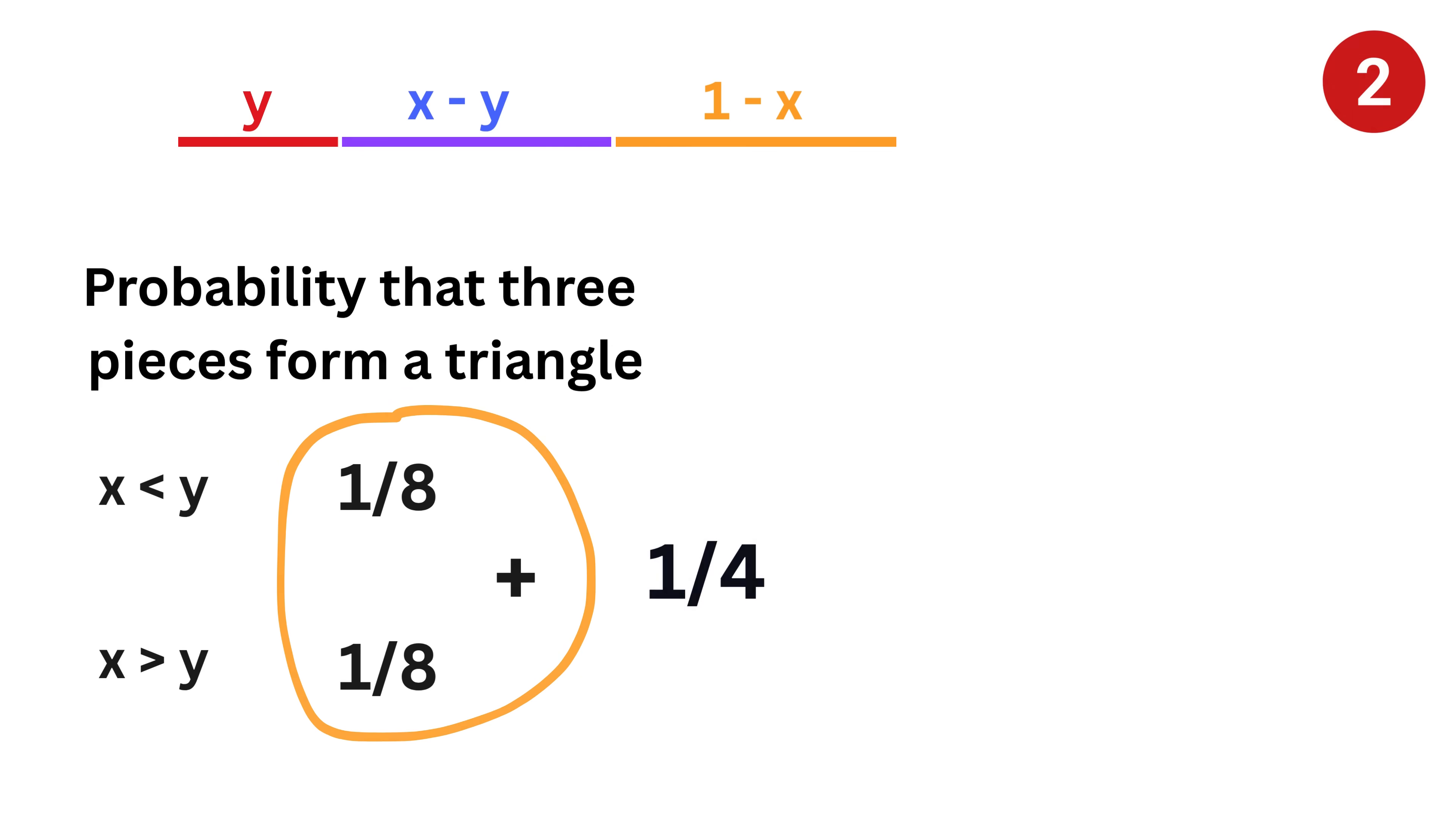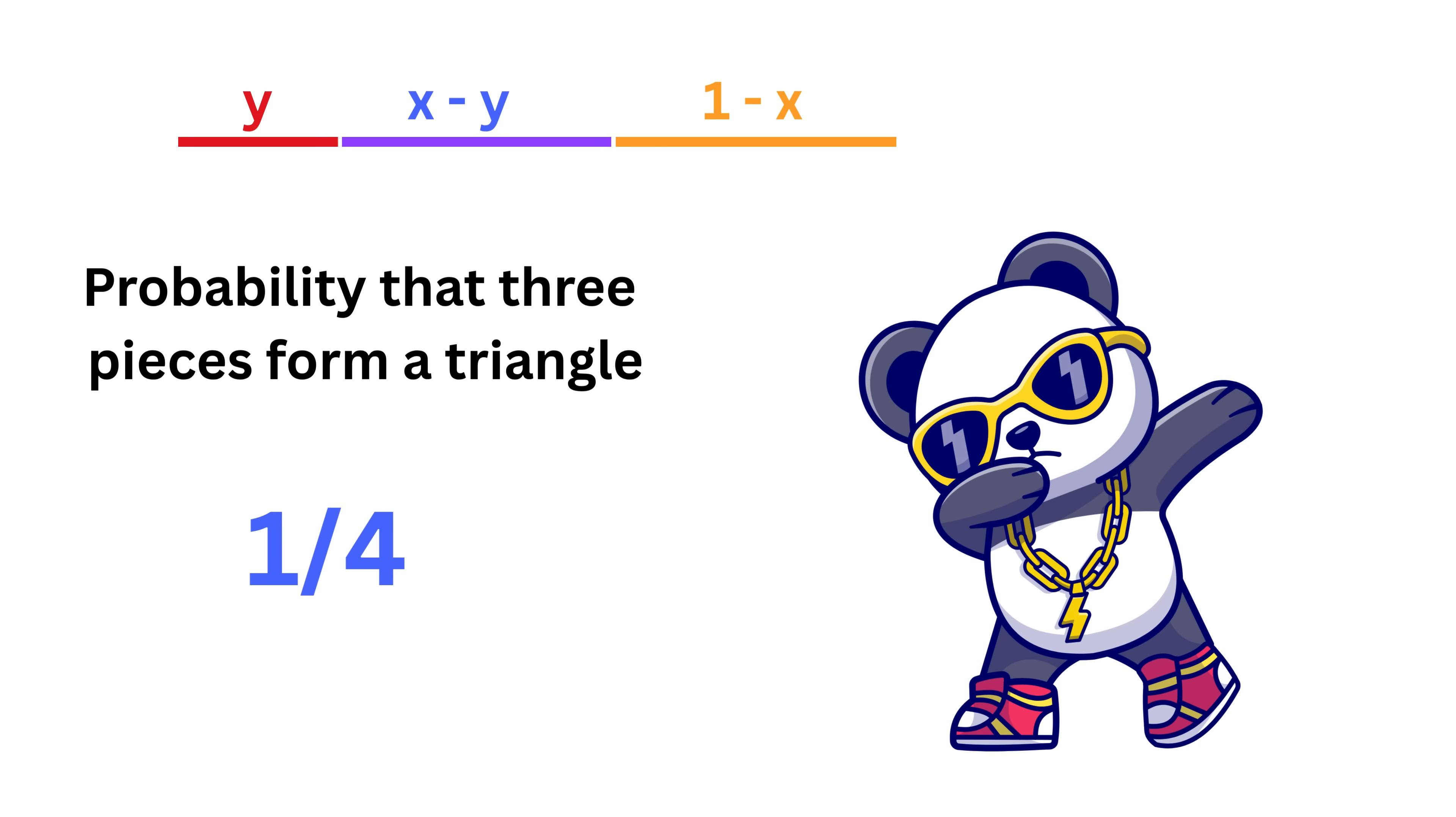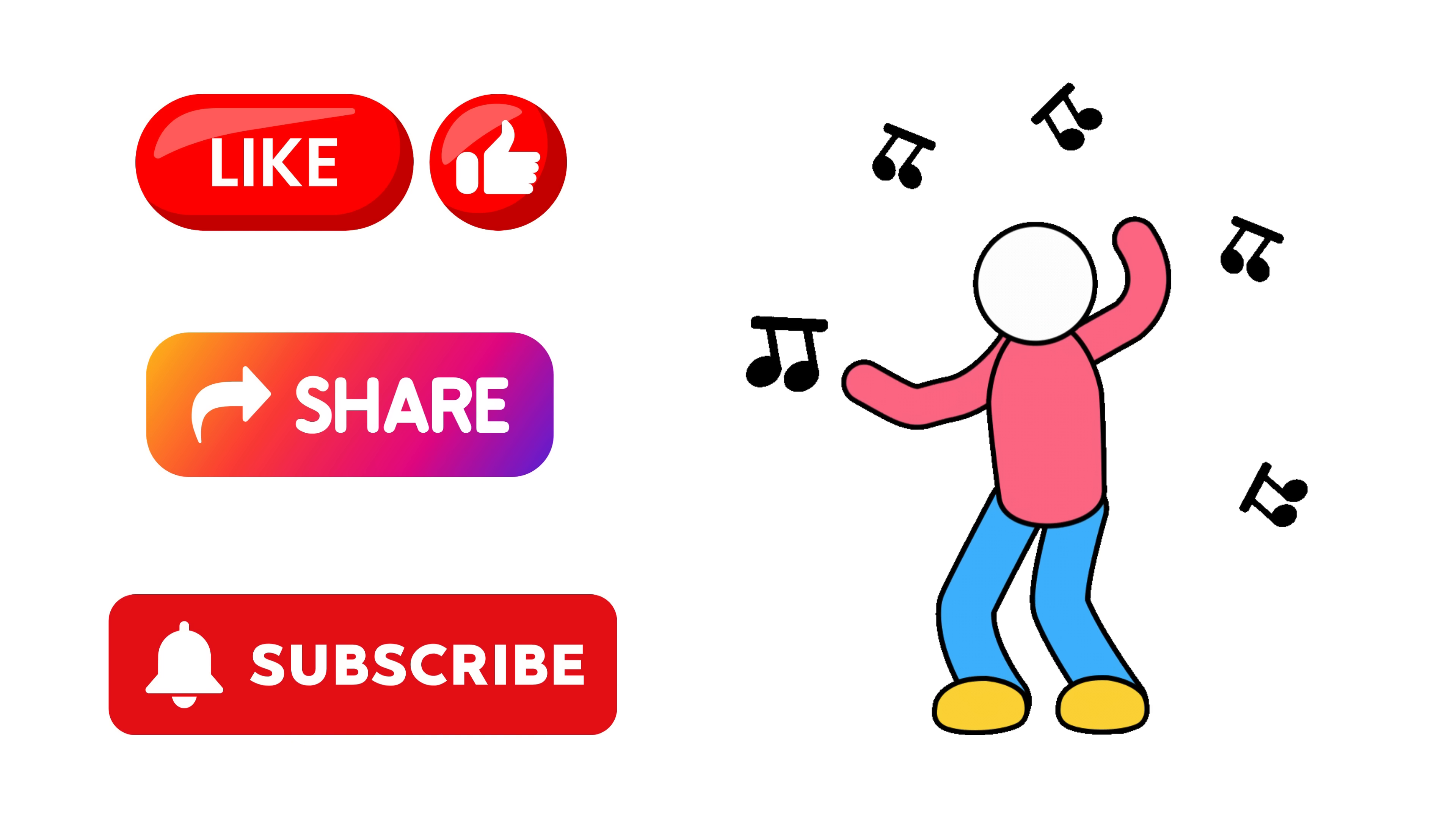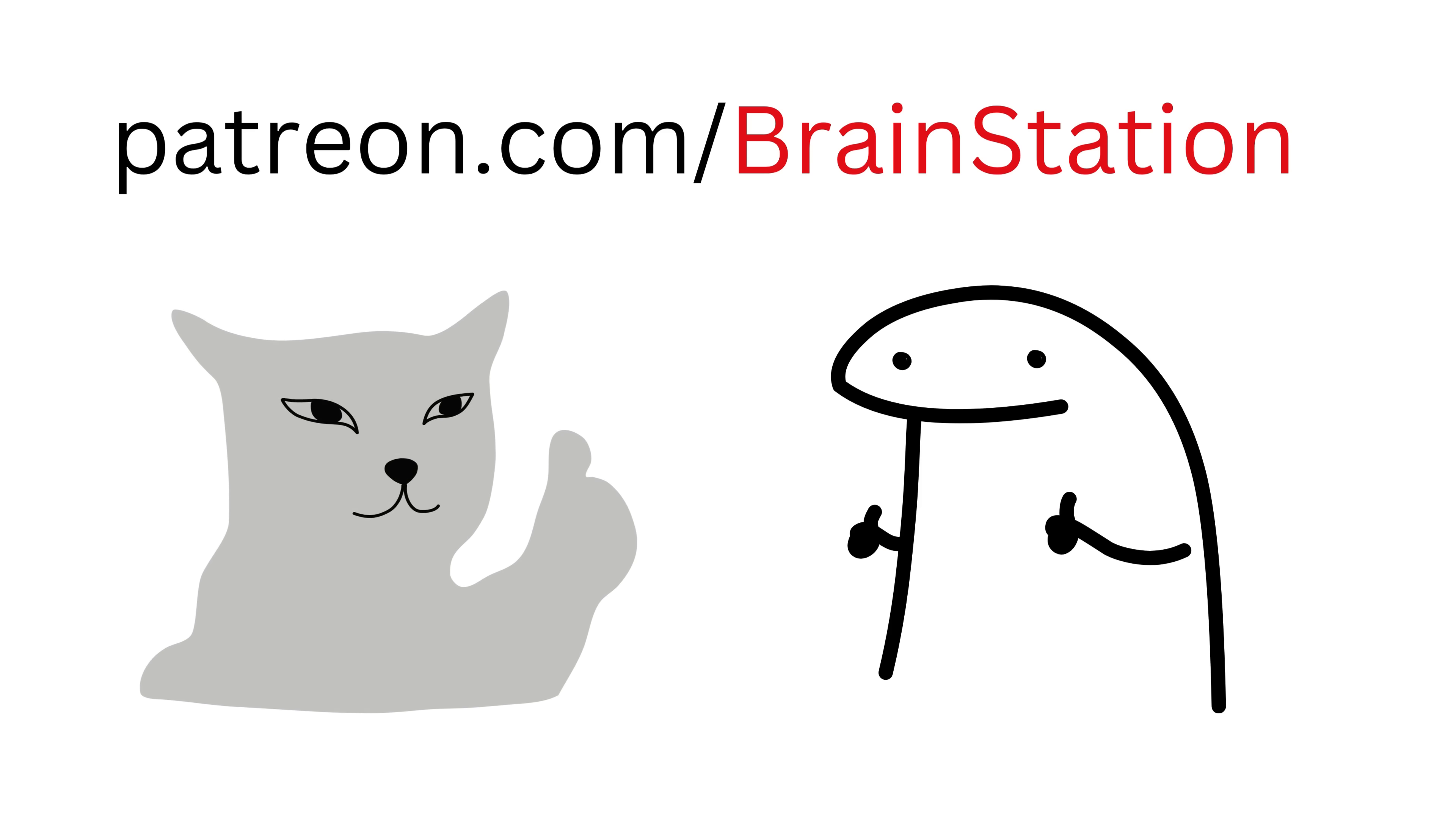Therefore, the probability that three random pieces form a triangle is one fourth or 25 percent, and that's it. This was super cool. If you enjoyed this video, please don't forget to like, share, and subscribe to our channel. Also, you can support my channel by joining our community and becoming a member.